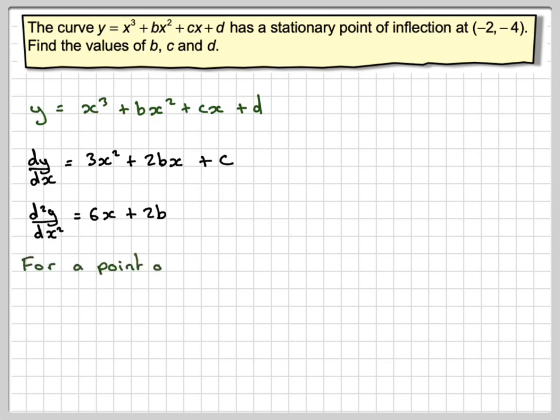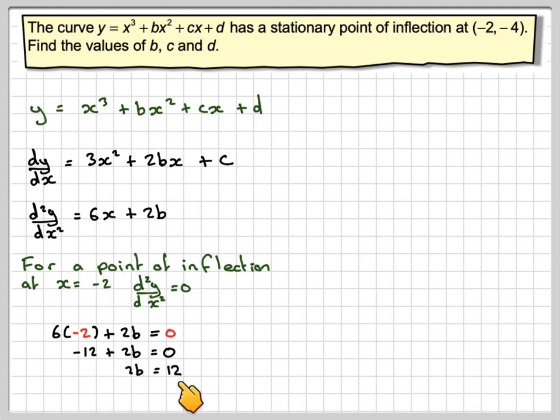Now, for a point of inflection at x equals minus 2, the second derivative will equal 0. So substituting in minus 2, 6 times minus 2 plus 2b will equal 0. That gives minus 12 plus 2b equals 0, so 2b equals 12, and that gives b equals 6.